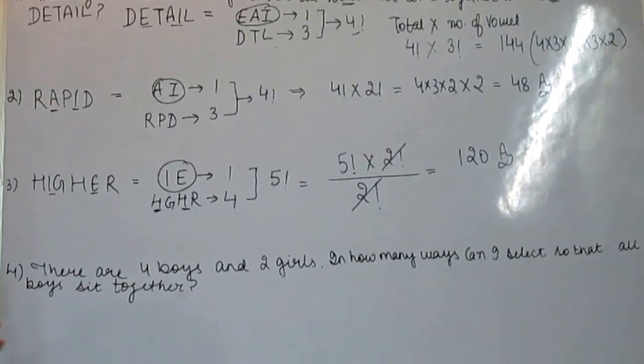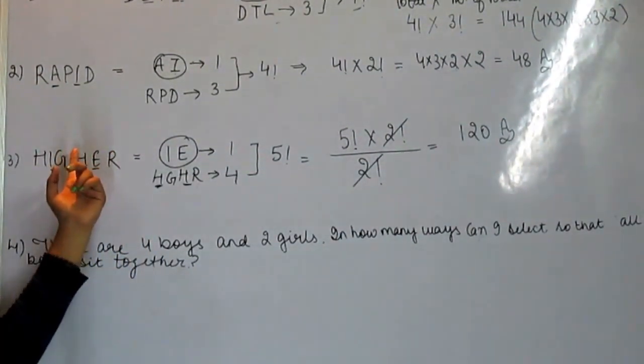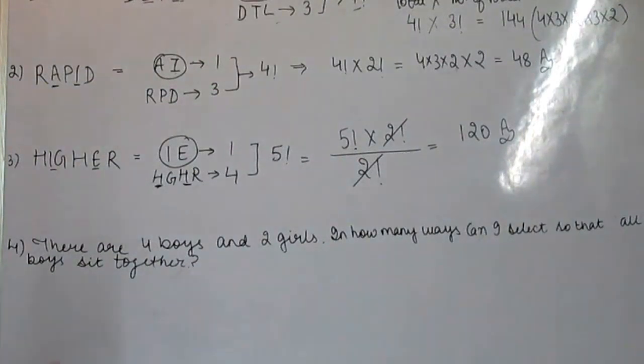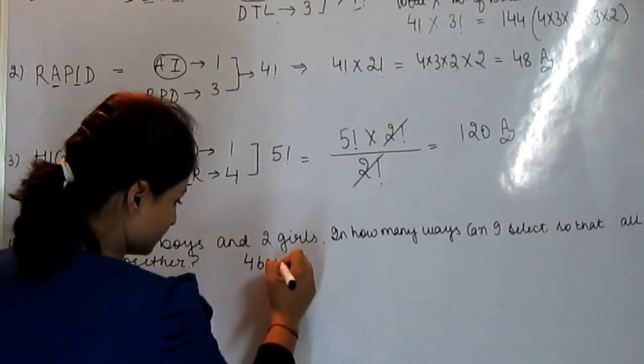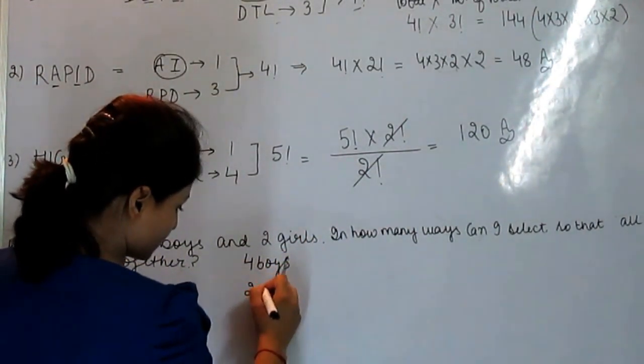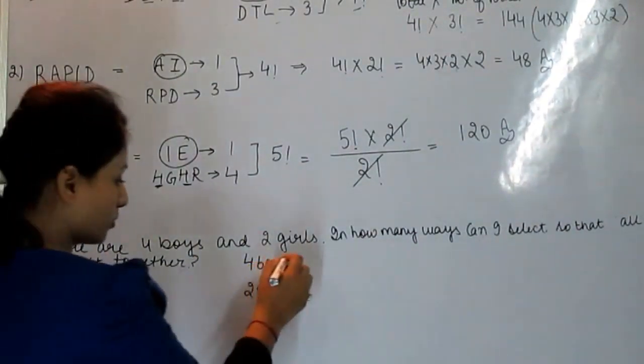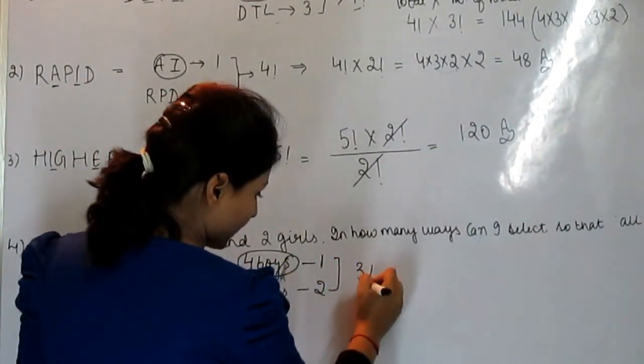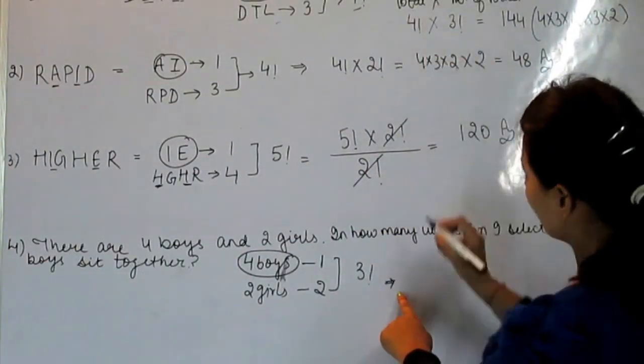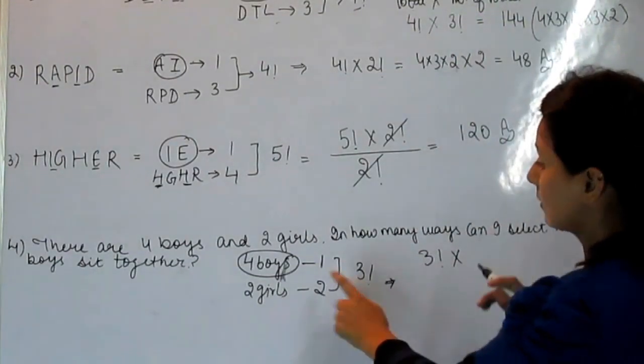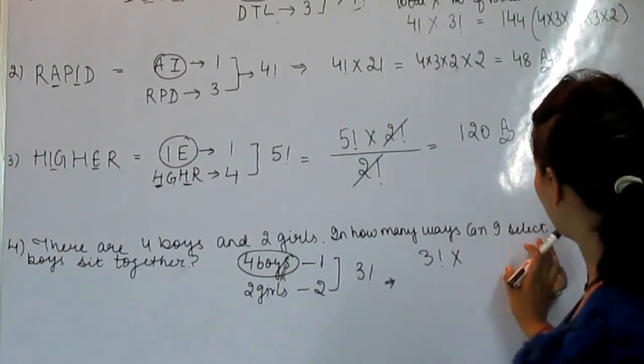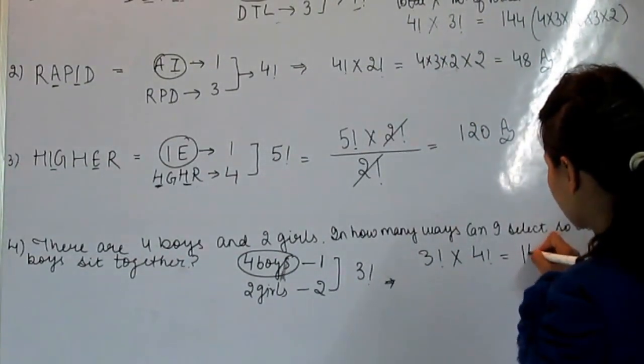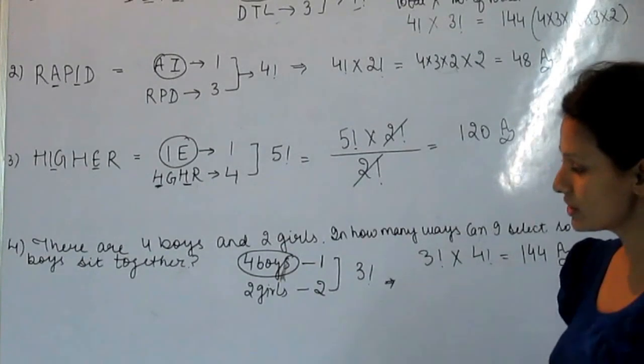In the fourth problem, there are 4 boys and 2 girls. The problem is similar. There are 4 boys and 2 girls. In how many ways can they sit so that all boys sit together? Boys are 4, girls are 2. We keep all boys together as one group. Total sections: 3. So 3 factorial into 4 factorial. That is 144, and this is the answer.